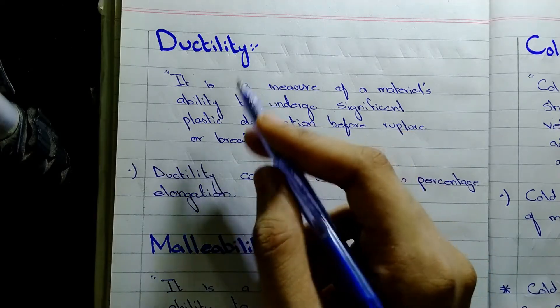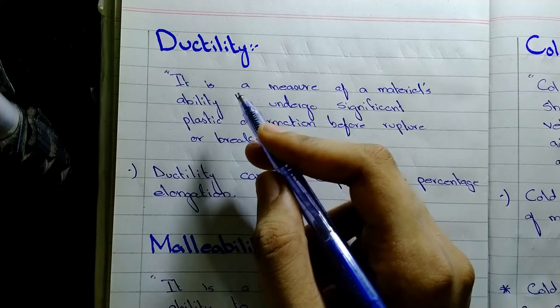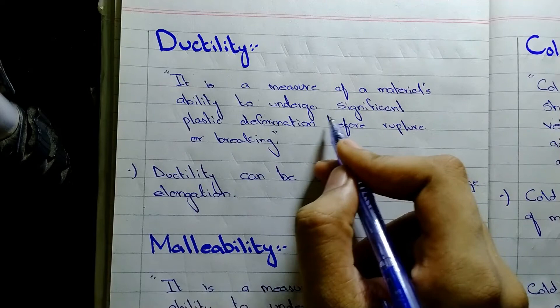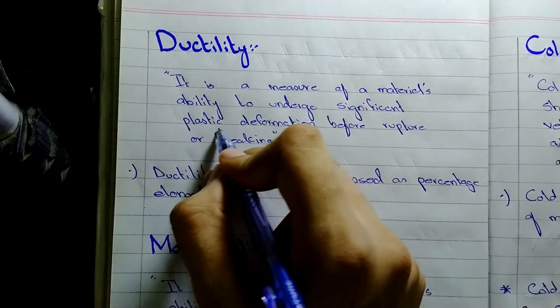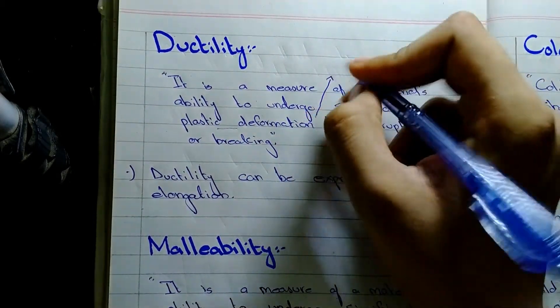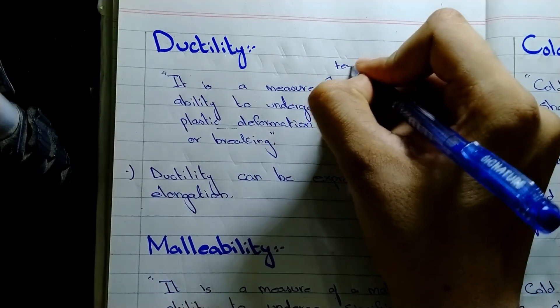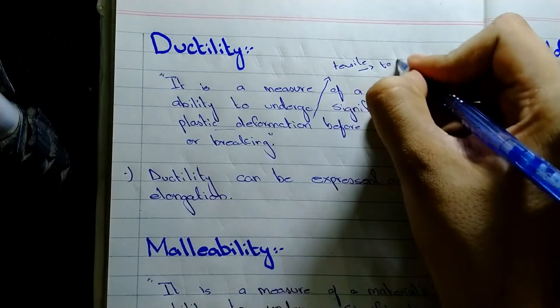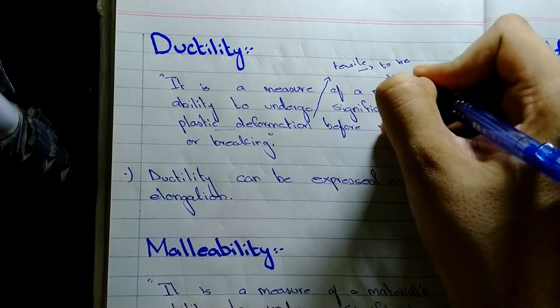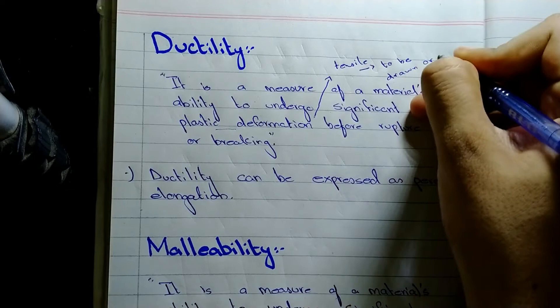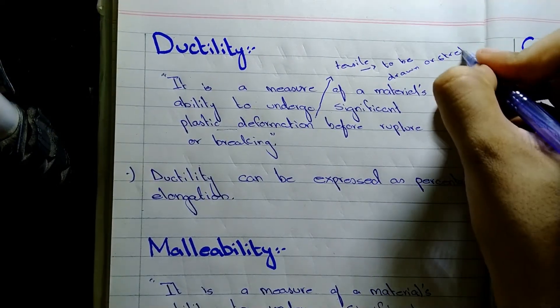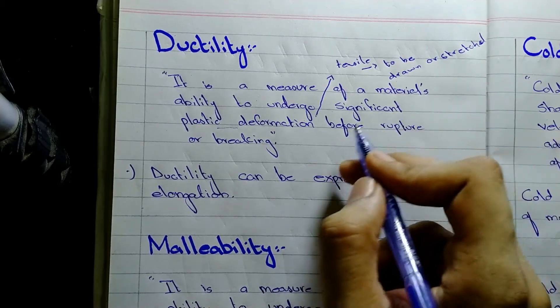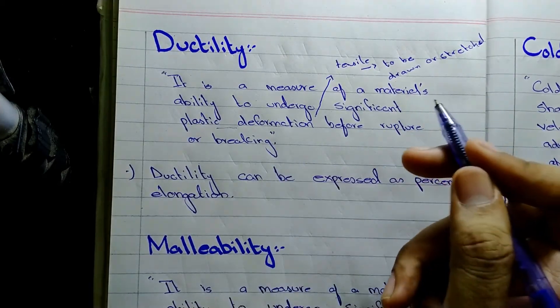So now we will start from ductility. Basically, ductility is defined as a measure of a material's ability to undergo significant plastic deformation. Plastic deformation in which way? In a tensile way, which means to be drawn or stretched.